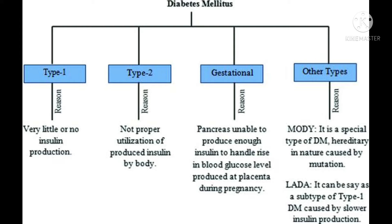Type 1 means very little or no insulin production. In Type 1, there is no insulin production in the body of the patient due to the deficiency or destruction of the pancreatic beta cells.